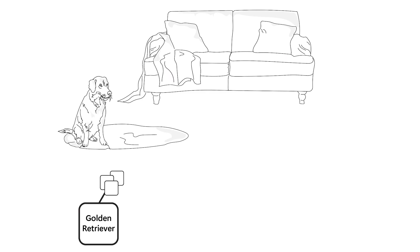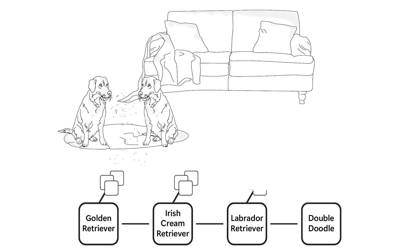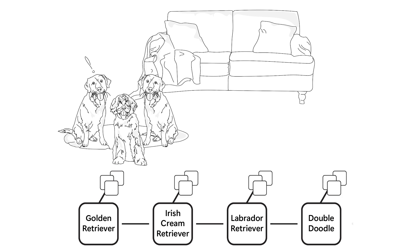To illustrate, let's consider a case where we need to identify dogs based on pictures. We would create a model to identify a golden retriever from a picture, but when faced with a picture of an Irish cream retriever, a Labrador retriever, or a double doodle — which yes, is a thing — it would necessitate individual models for identification. We would have to scale this for each and every type of dog. This mirrors the challenges in security, as individual supervised or even unsupervised models have trouble scaling collective understanding.